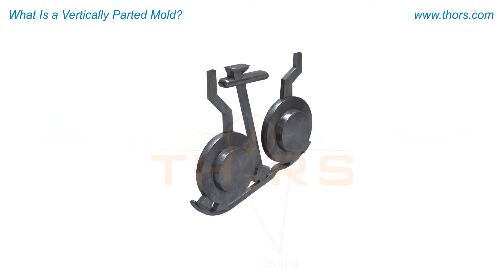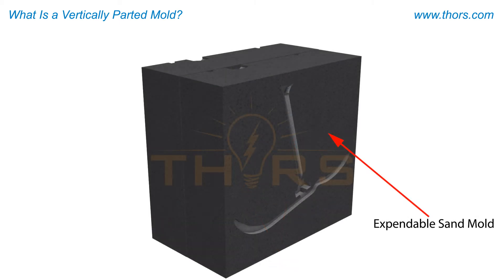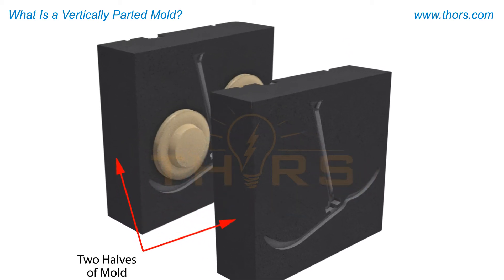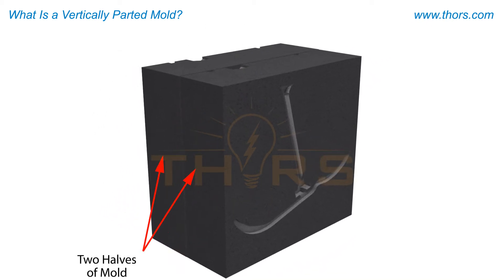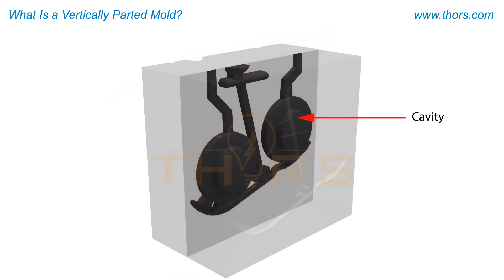When producing a casting from any of the bonded sand molding processes, an expendable sand mold is commonly used. A typical mold consists of at least two halves that, when closed together at the parting line, form a cavity in the desired shape of the casting.